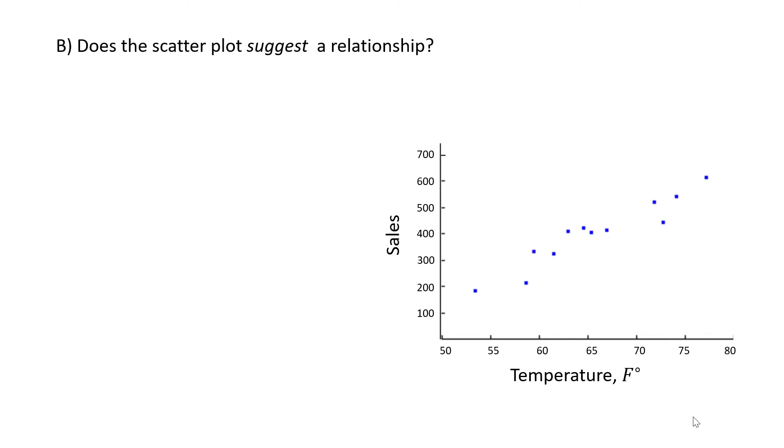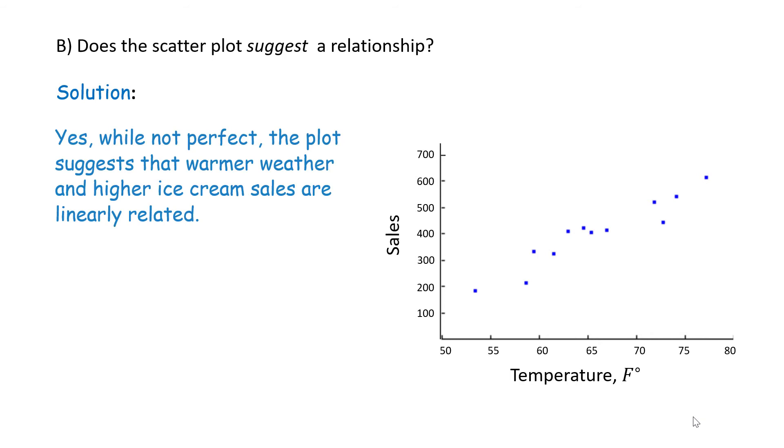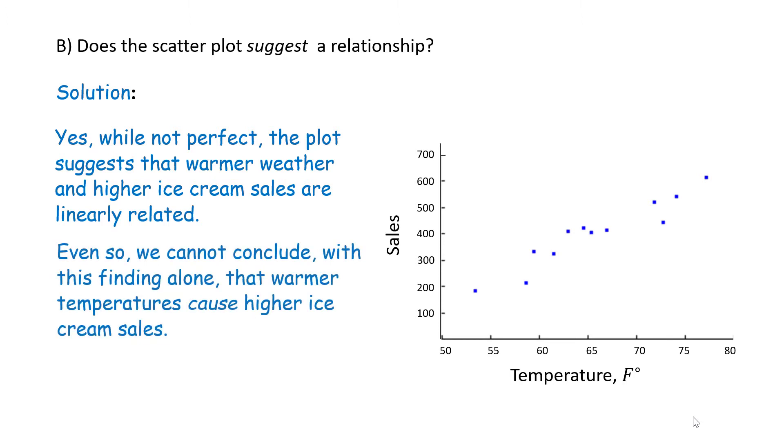Part B. Does the scatter plot suggest a relationship? For the solution: Yes, while not perfect, the plot suggests that warmer weather and higher ice cream sales are linearly related. Even so, we cannot conclude with this finding alone that warmer temperatures cause higher ice cream sales.